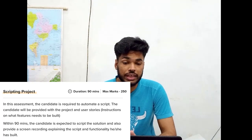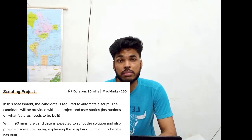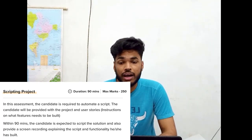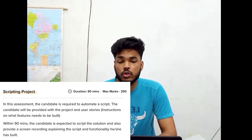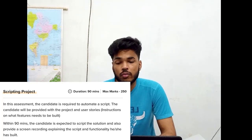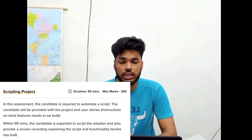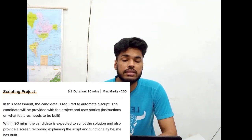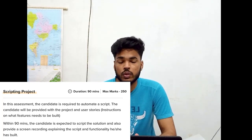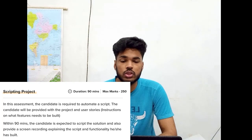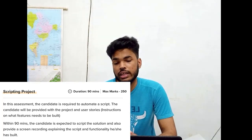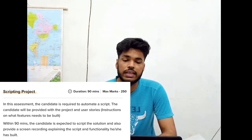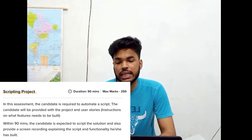Round three, Scripting Project, has a duration of 90 minutes and the marks allotted are 250. In this assessment, the candidate is required to automate a script. The candidate will be provided with a project and user story. Within 90 minutes, the candidate is expected to script the solution and also provide a screen recording explaining the script and functionality they have built.